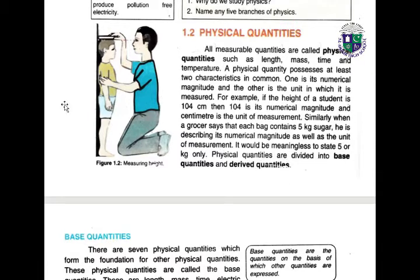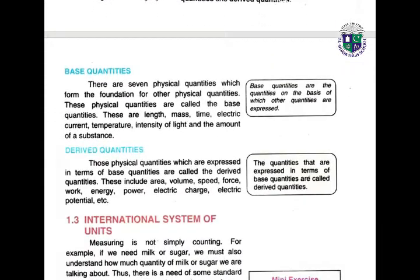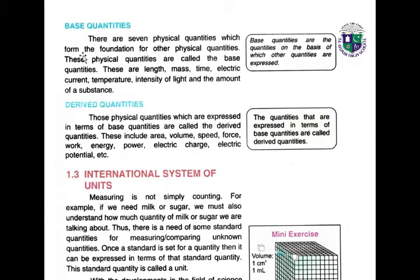Physical quantities are divided into base quantities and derived quantities. Base quantities are the quantities on the basis of which other quantities are expressed. There are seven physical quantities which form the foundation for other physical quantities. These are: length, mass, time, electric current, temperature...